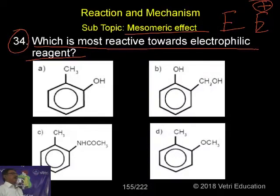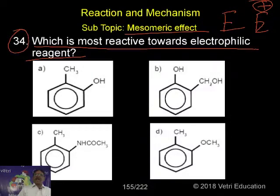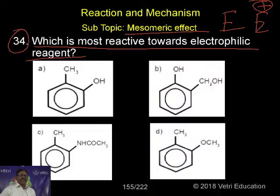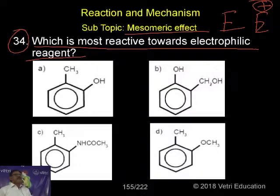In aromatic chemistry, there are five important electrophilic substitution reactions. One is Friedel-Crafts alkylation — generally the methyl cation, CH3+. Second is acylation — generally CH3CO+. Third is halogenation — Cl+.